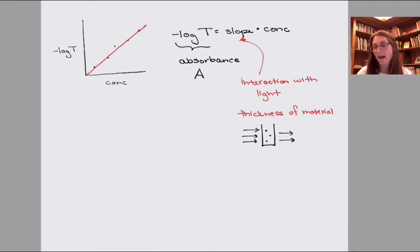But if we have the same concentration but, say, twice the thickness, that gets us twice the particles, and so more of the light is going to be absorbed. And so we call this thickness of material the path length.